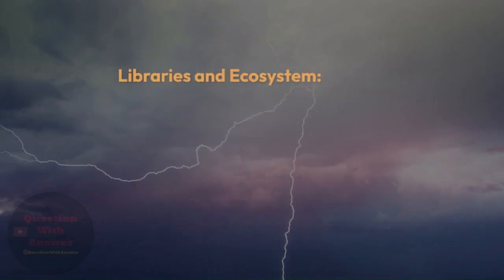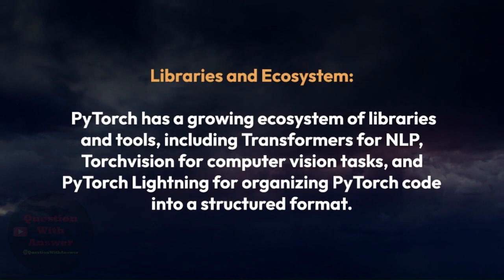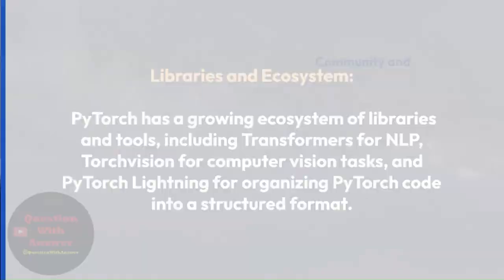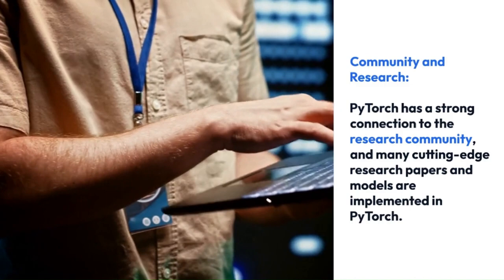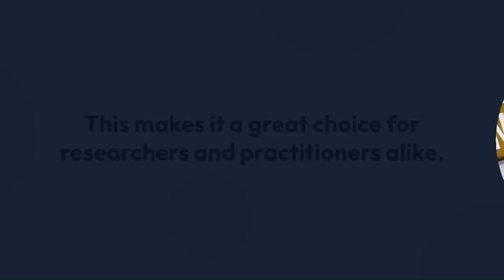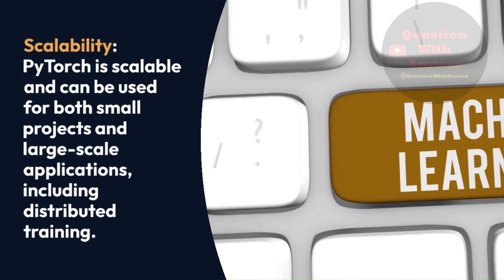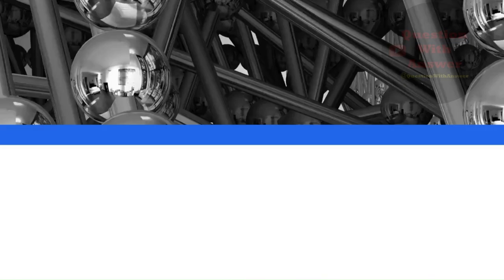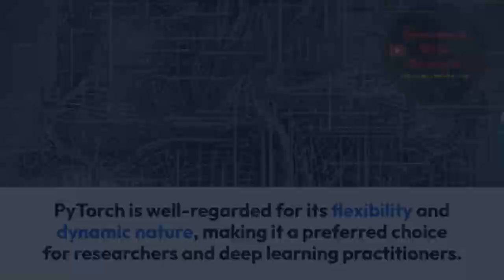Libraries and Ecosystem: PyTorch has a growing ecosystem of libraries and tools, including Transformers for NLP, TorchVision for computer vision tasks, and PyTorch Lightning for organizing PyTorch code into a structured format. Community and Research: PyTorch has a strong connection to the research community, and many cutting-edge research papers and models are implemented in PyTorch, making it a great choice for researchers and practitioners alike. Scalability: PyTorch is scalable and can be used for both small projects and large-scale applications, including distributed training. It's commonly used in areas such as computer vision, natural language processing, and reinforcement learning.